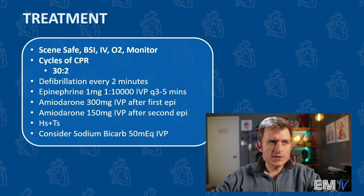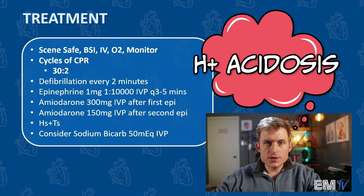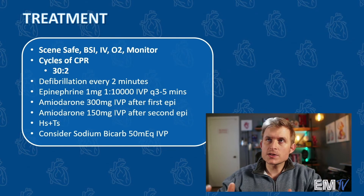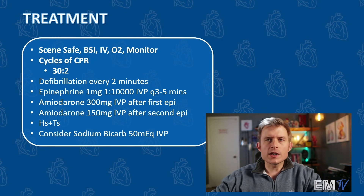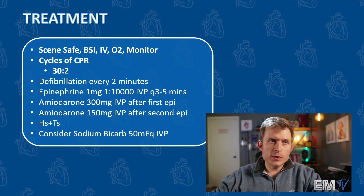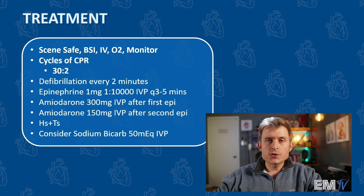I'm going to consider H's and T's, and because this is a crush syndrome, I can consider hydrogen ion acidosis as one of the possible causes of the arrest. I'm going to administer sodium bicarb, 50 milliequivalents, given IV push. Additionally, I'm going to consider hanging IV fluids, because one of the treatments — really the gold standard treatment for crush syndrome — is hydration. So I'm going to consider hanging IV fluids as well. And that's it.